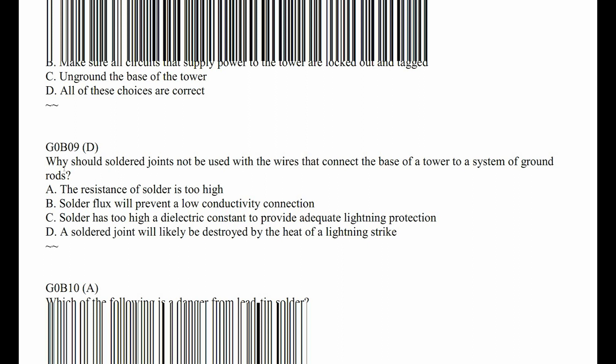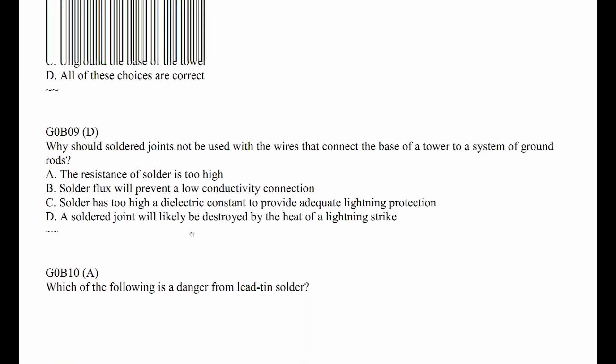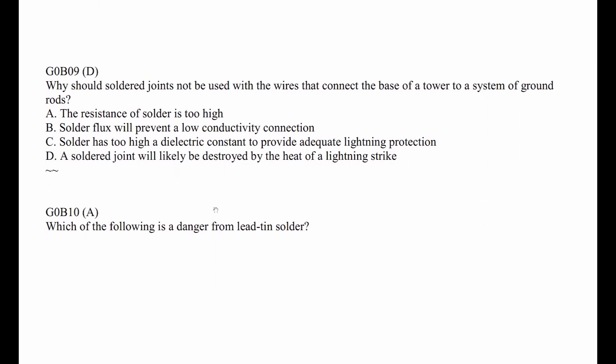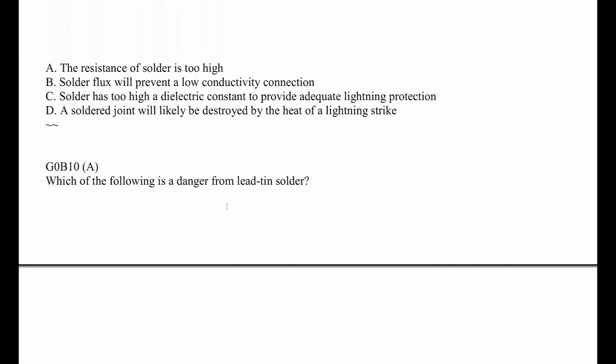G0B09: Why should solder joints not be used with wires that connect the base of a tower to a system ground? A solder joint would likely be destroyed by the heat of a lightning strike — the wire will likely be destroyed too. Mechanically it's not a good connection, and even a small amount of voltage can melt the solder.